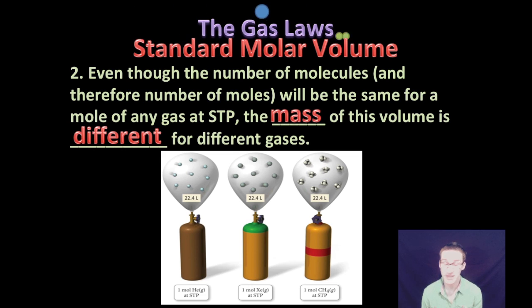But again, just keep in mind that one mole of helium gas, although it has the same number of particles of one mole of xenon gas and one mole of methane gas, the masses of those gases will differ. Even though they have the same number of molecules, each of those molecules is made up of different things.